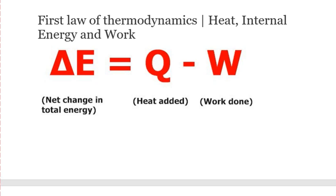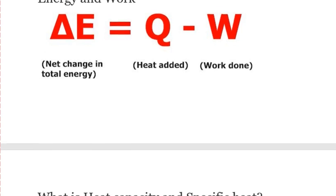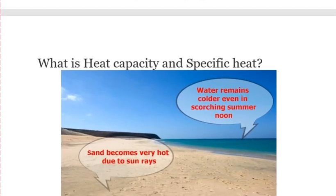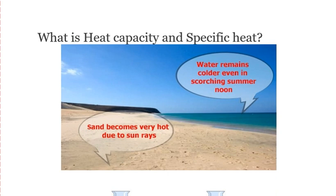There are certain specific parameters related to your first law of thermodynamics that we need to mention in order to fully understand the concept. This includes your heat capacity and your specific heat. What is the difference between specific heat and heat capacity? I have here a specific picture to illustrate this.